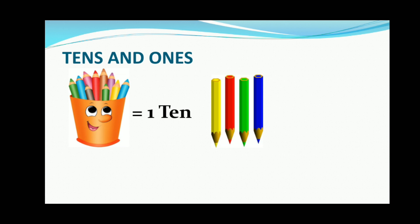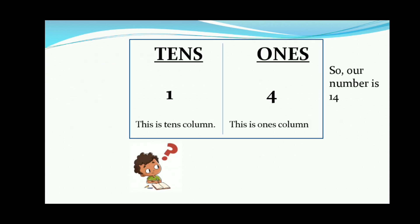On the other side there are four color pencils. They are not in a group, so they will be counted individually. Let's count: 1, 2, 3, 4 — so it will be four ones only. Now let's put these in the tens and ones columns, so our number comes out as 14.